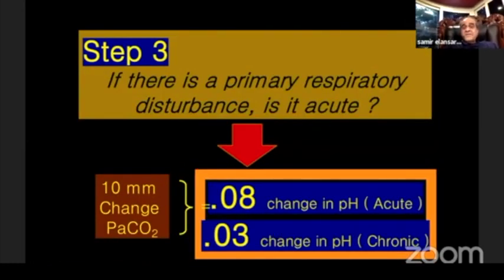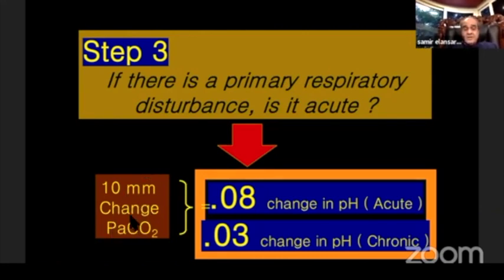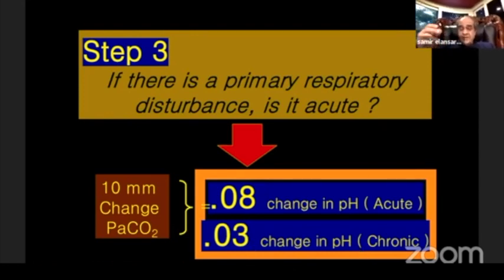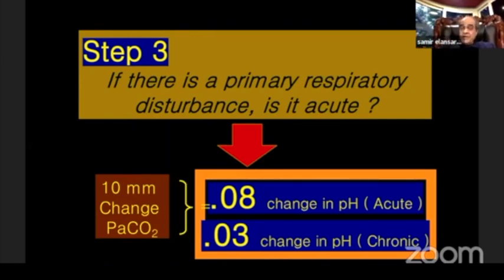Step three: if there is a primary respiratory disturbance, determine whether it is acute or chronic. Every 10 mmHg change in arterial CO2 changes the pH by 0.08 in the acute state and by 0.03 in the chronic state. If bicarb has changed significantly, it is chronic compensation. If bicarb is not yet changing much, it is acute.